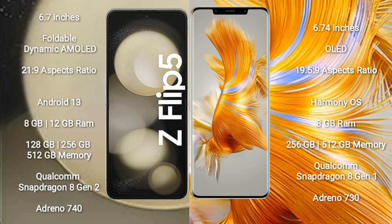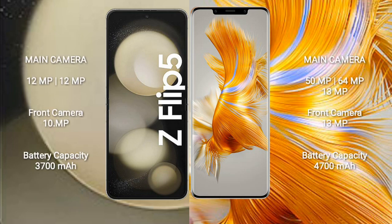Huawei Mate 50 Pro comes with 8GB RAM and 256GB or 512GB internal storage, featuring a Qualcomm Snapdragon 8 Gen 1 processor and GPU Adreno 730. Samsung Galaxy Z Flip 5 has a dual rear camera setup of 12MP plus 12MP and a 12MP front camera. Huawei Mate 50 Pro has a triple rear camera setup of 50MP plus 64MP plus 13MP and a 13MP front camera.